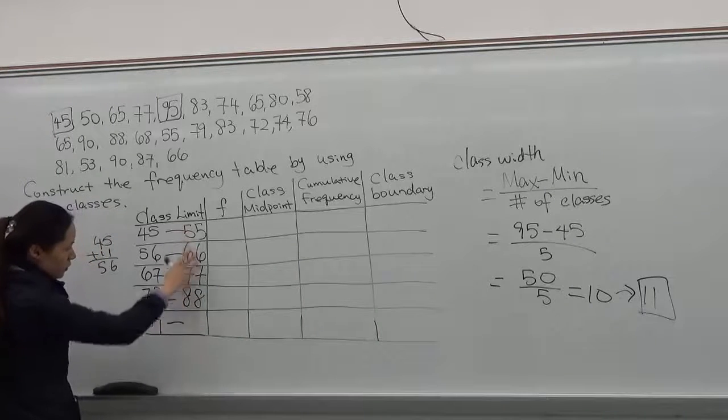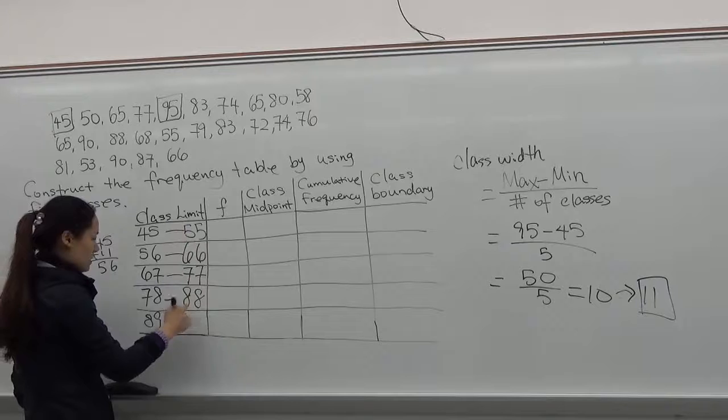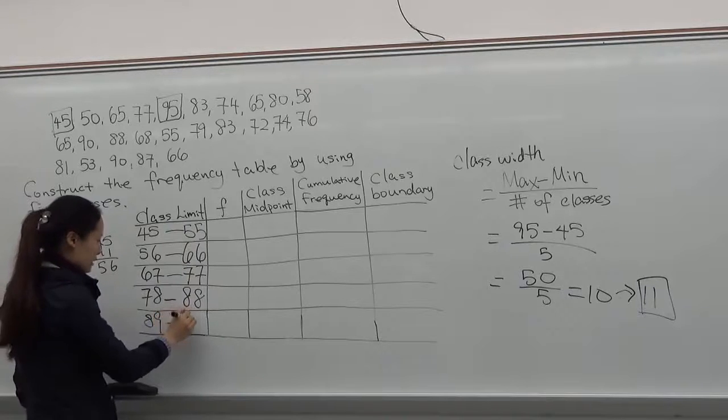And to find that one, you will know they're all different by 11. You're adding 11 to 88. That's 99.